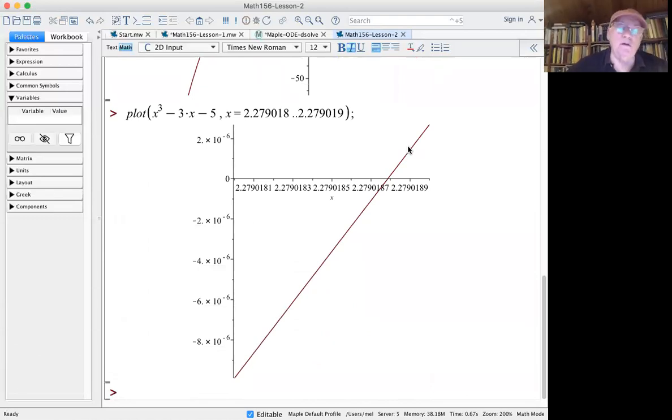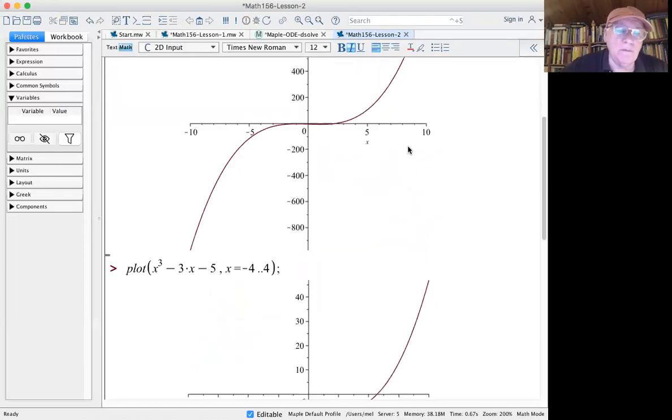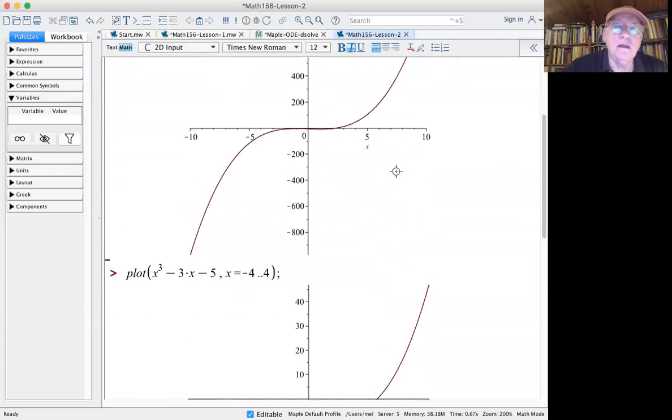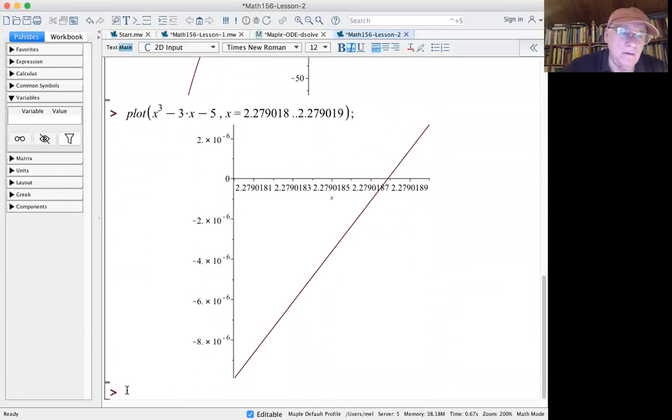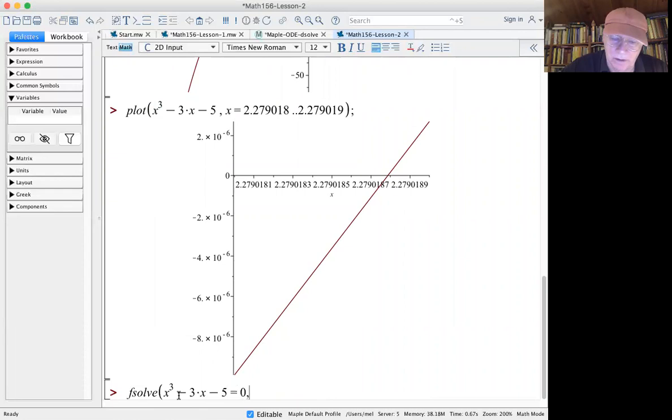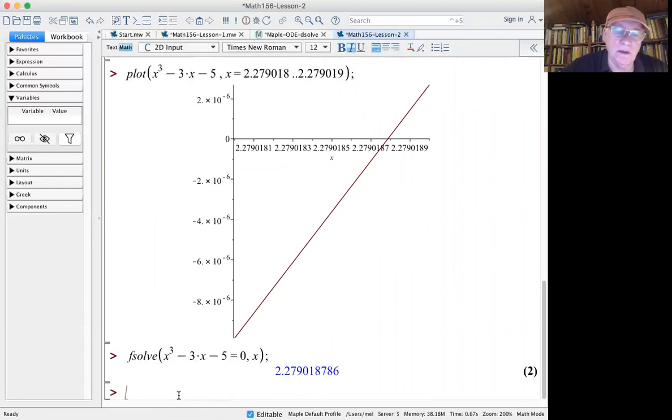Now we can also just use the F-solve command. F-solve means solve an equation and give me the solution as a decimal. So F-solve, solve the equation, this equals zero, comma x solve for x. So here we get the solution to 10 significant digits. 2.27901876. It's consistent.